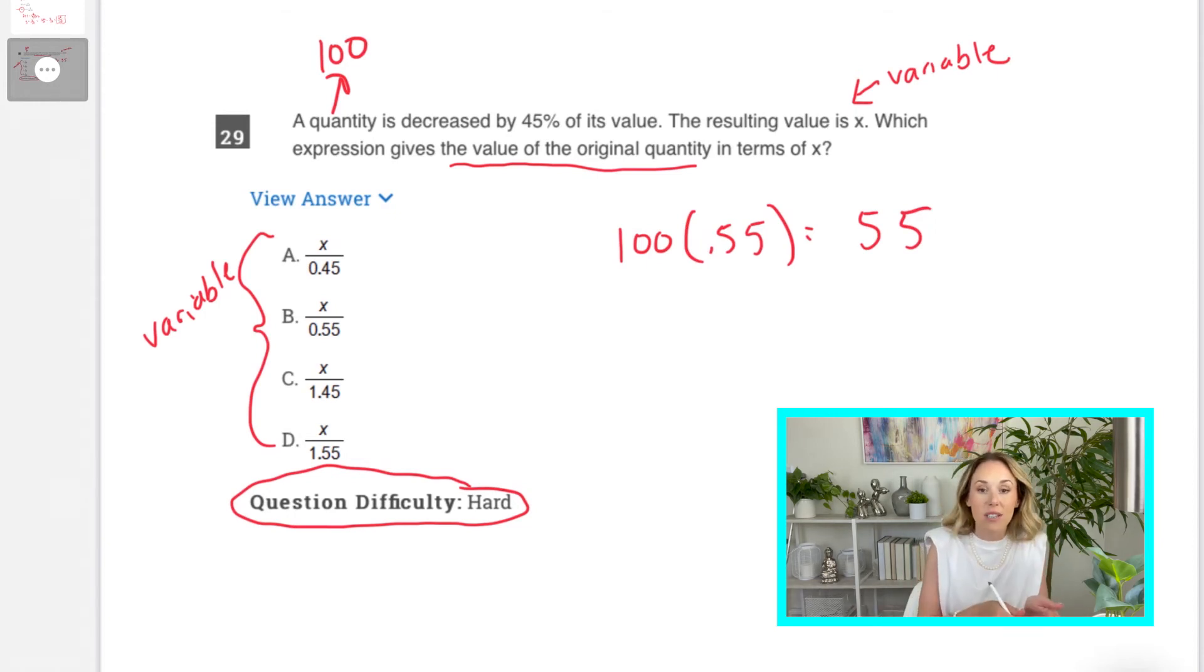Remember, if it's a decrease, you multiply by what remains. So, if I take 45% away, which is 45 for 100, I have 55 left. That's my magic number in this case. That's what I'm looking for in the answer choices.